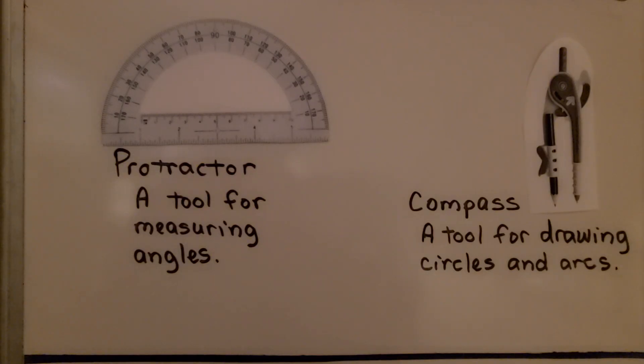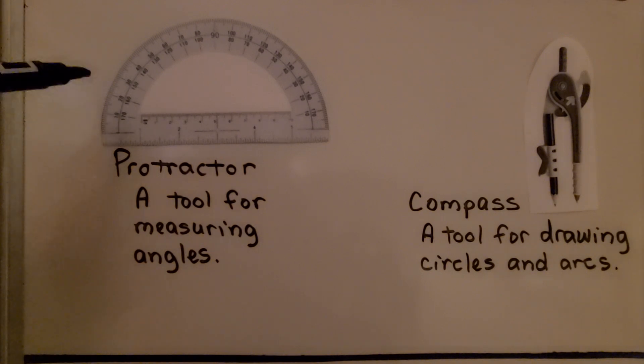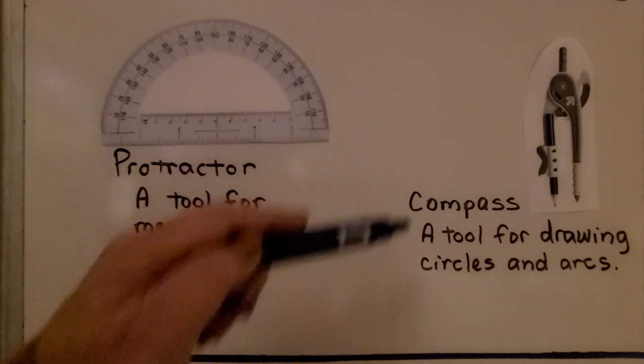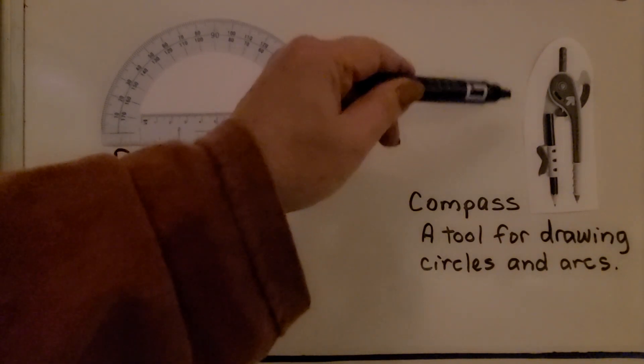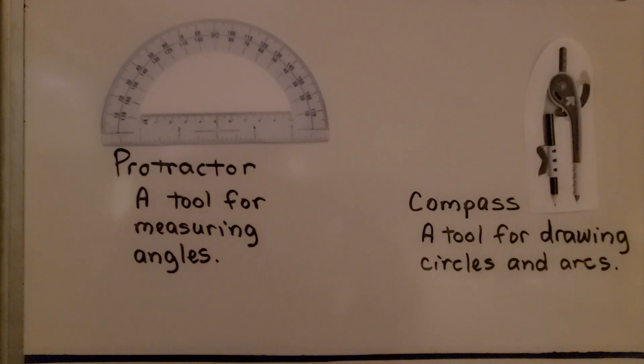So before we start, for a quick review: this is a protractor — it's a tool for measuring angles. This is a compass — it's a tool for drawing circles and arcs.